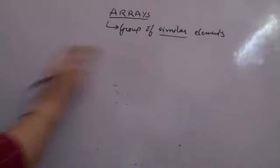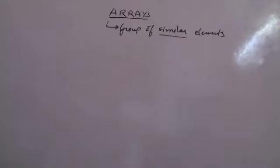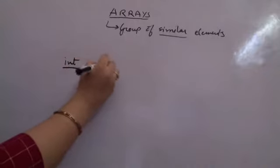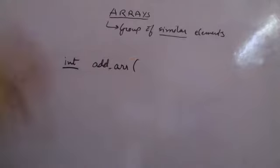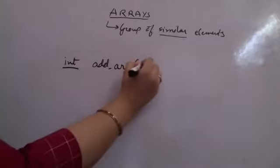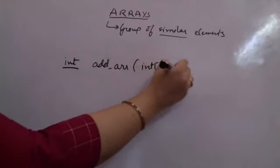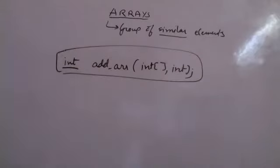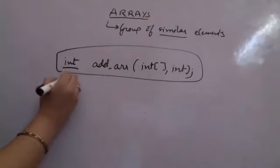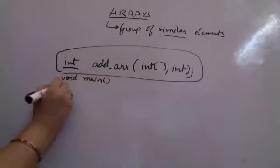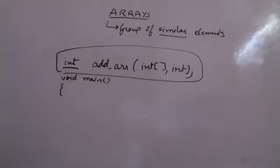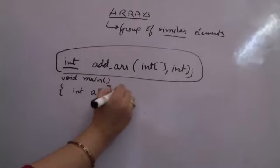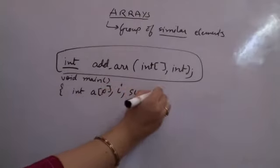Suppose I give a function prototype. It returns an integer, and the function is called 'add_array' which adds all elements in an integer array. The prototype takes an integer array and another integer for size. After declaring this function, in void main I create an array A[10], along with variables i and sum initialized to 0.